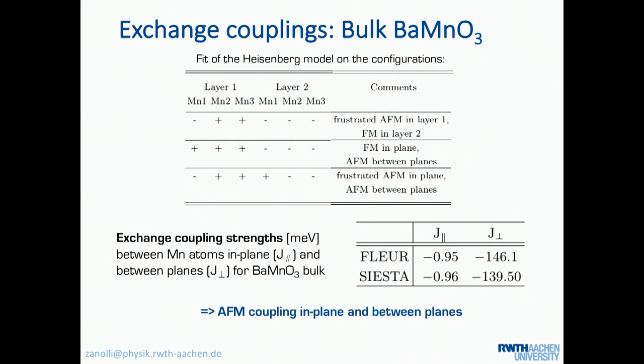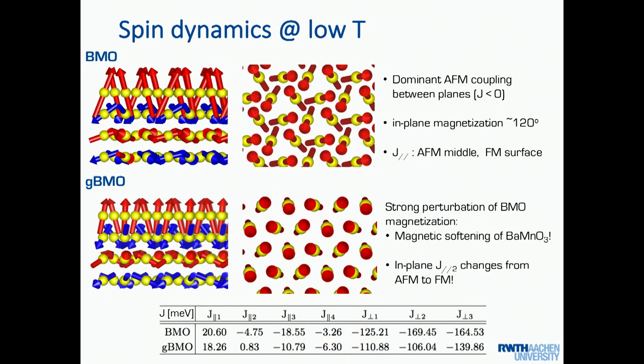So, this is an example of a configuration that one can choose. And we calculated the J with Siesta and Fleur. And the agreement between the two is really impressive. So, we use the same configuration, total energy calculation for the bulk. And we get basically the same strength for the interaction. Main message here, it's antiferromagnetic coupling in between the planes, which we all agree. And the antiferro in plane, so these calculations are assuming collinear spins. So, it's frustrating the system.